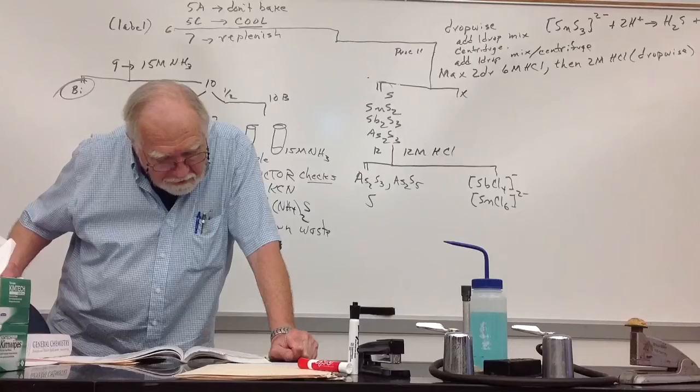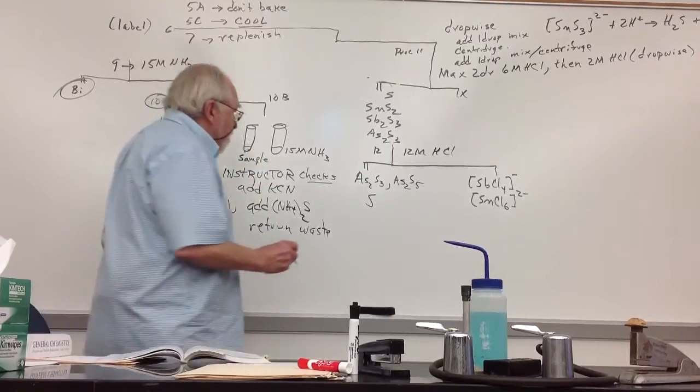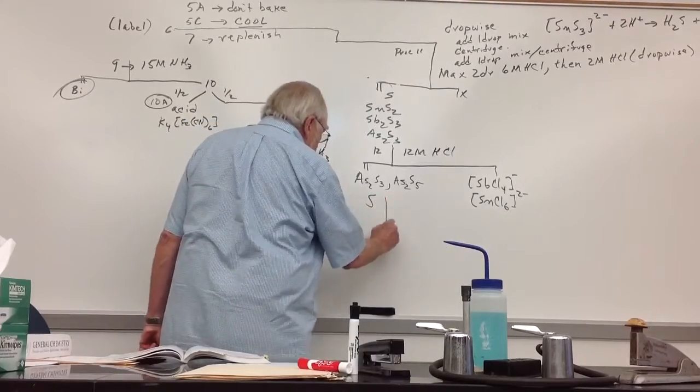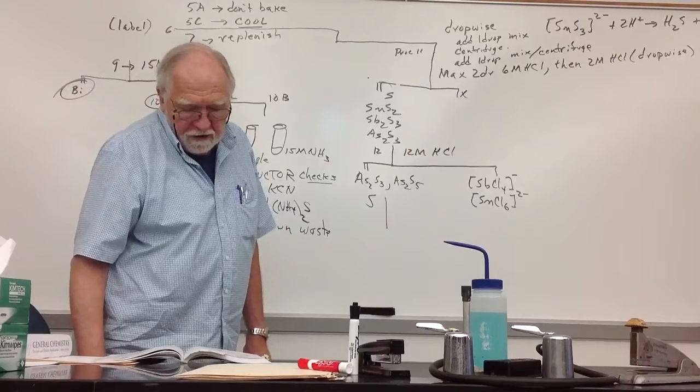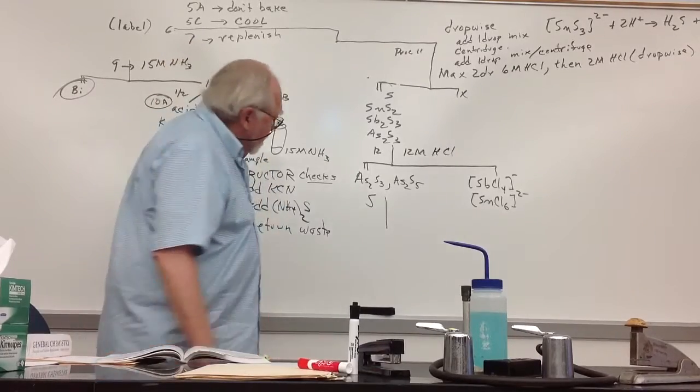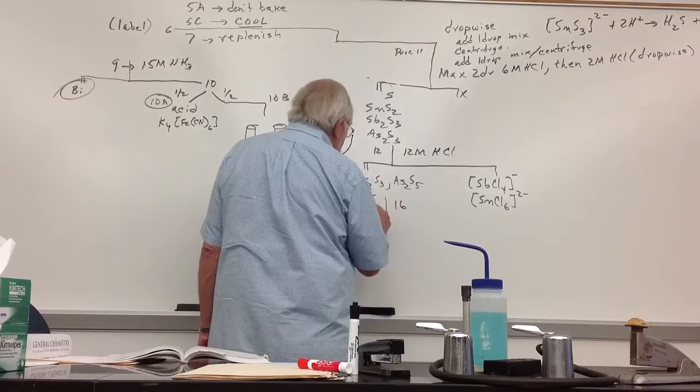But you're - this is procedure 12, procedure 13 is the actual arsenic test. You're washing the precipitate again. You set all of that. You're adding water, et cetera. But the tricky part here, when you add the 16-molar HNO3, this is procedure 13.